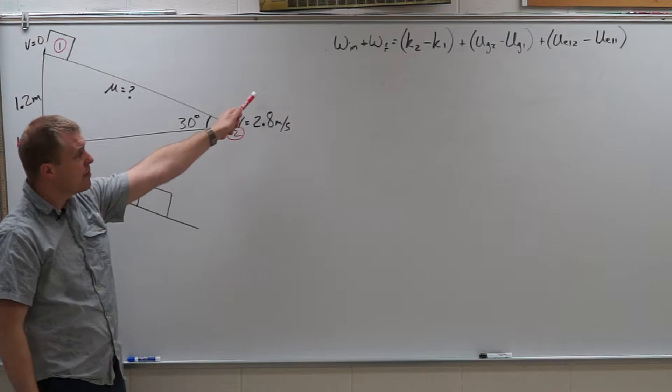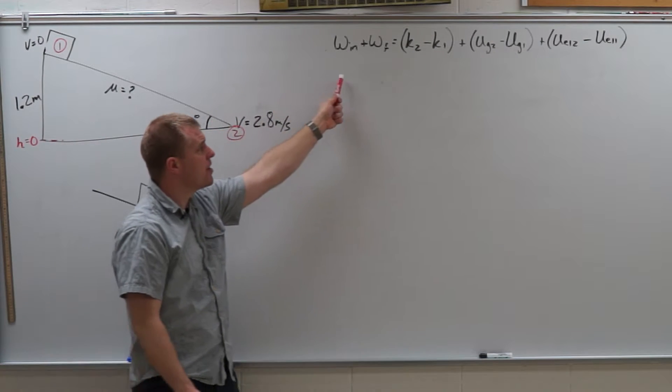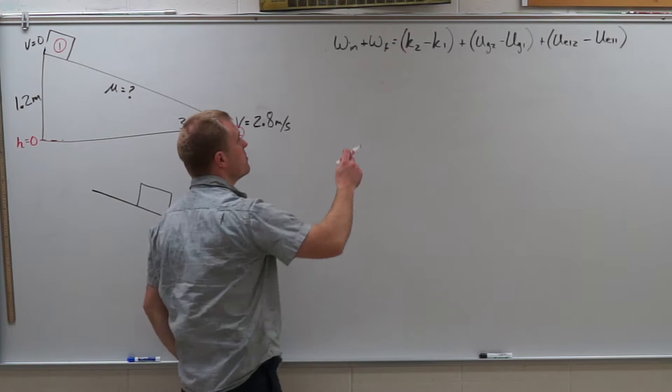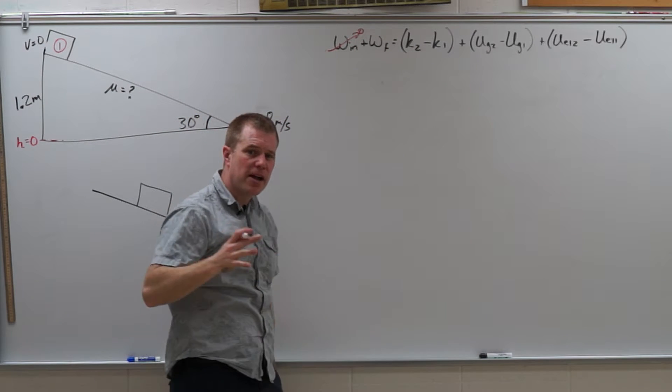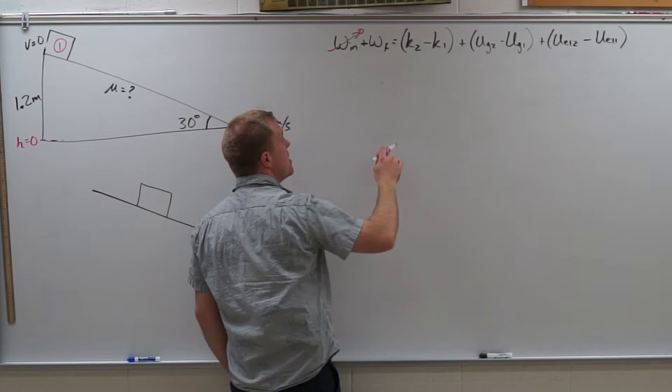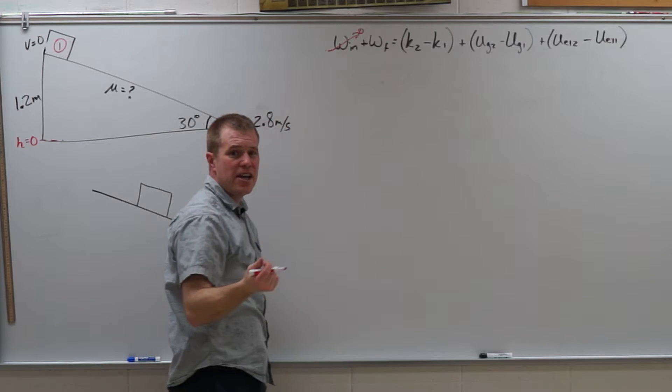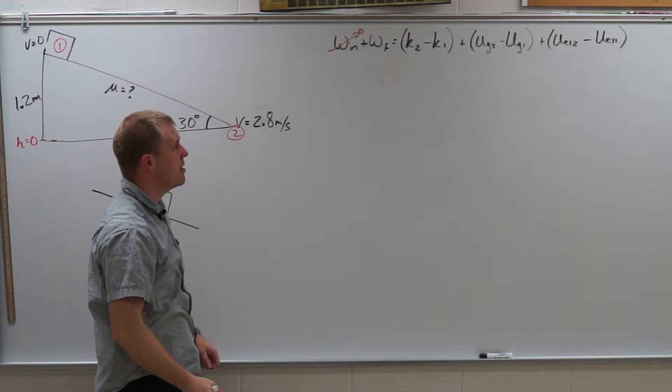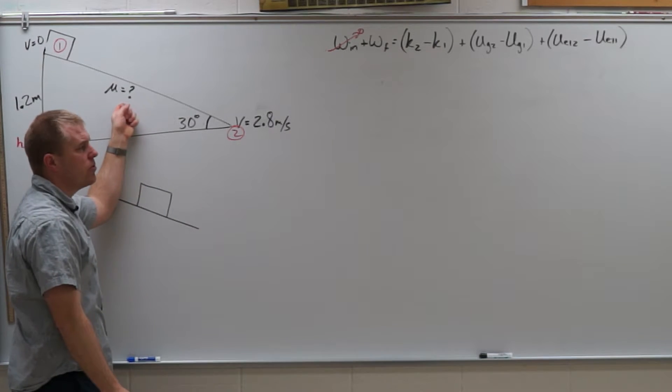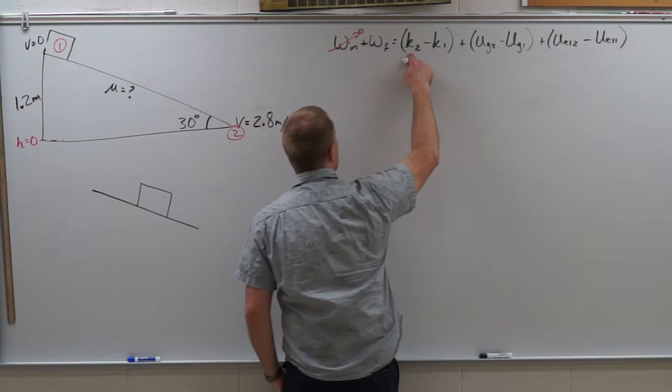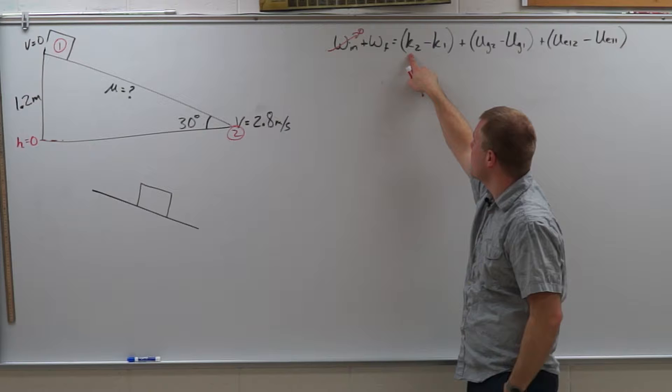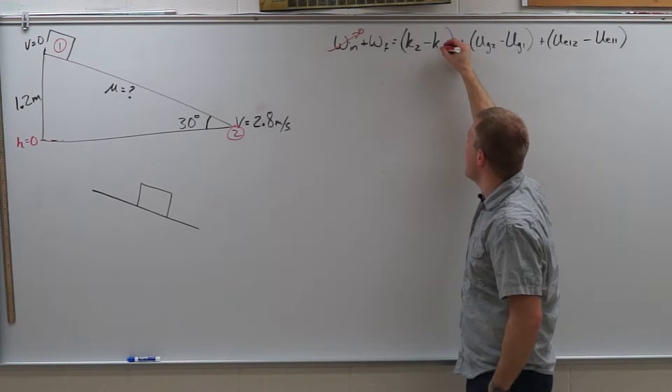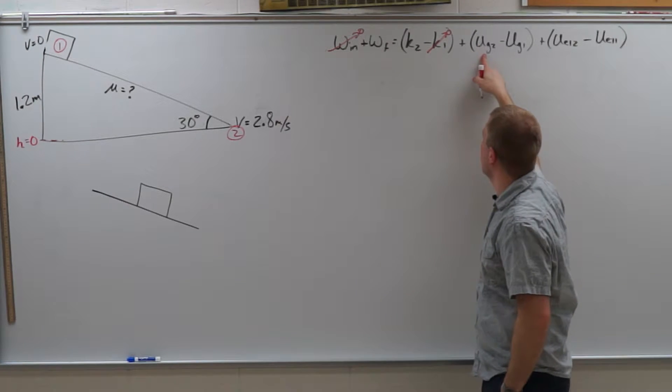Next I'm going to cancel stuff out of my work kinetic energy theorem problem. So work in is zero because there's no applied force pushing that block down the slope. Work done by friction, there is friction so there is going to be work done by friction. That's where that mu value we're trying to solve for is. At the bottom it is moving so there is kinetic energy 2. At the top it's not moving so there is no kinetic energy 1.